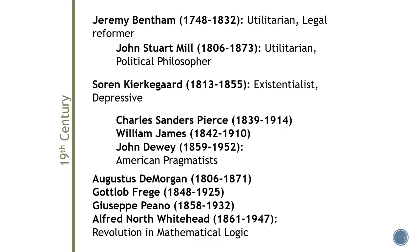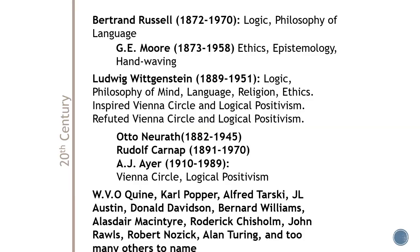Toward the end of the 19th century, in analytic philosophy, we start to get a kind of revolution in mathematical logic, owed to figures like Augustus De Morgan, Gottlob Frege, Giuseppe Peano, and Alfred North Whitehead. Those figures really set up the crowning achievements of Bertrand Russell, who is really the first major figure of 20th century philosophy. The period between 1900 and 2000 we call 20th century philosophy for the same reason — that's when it happened. The big revolution in mathematical logic is largely owed to what Russell did in the very early 20th century, building upon the work of those previous figures.